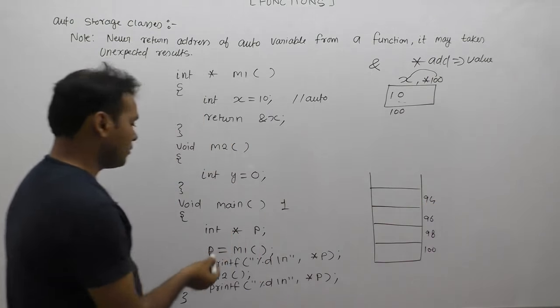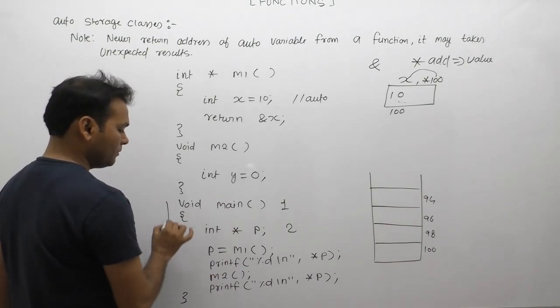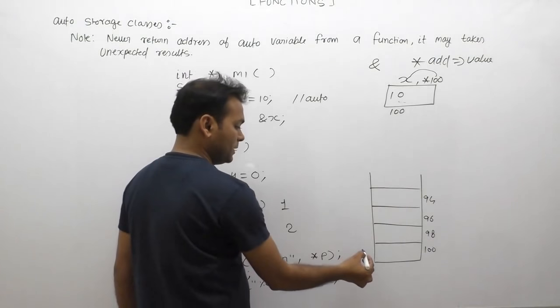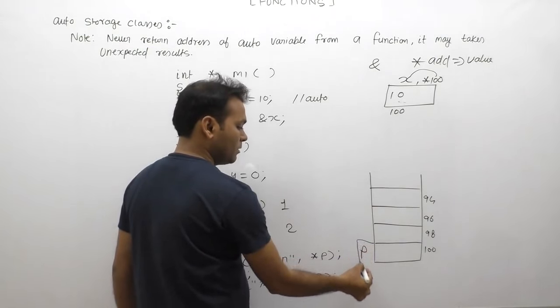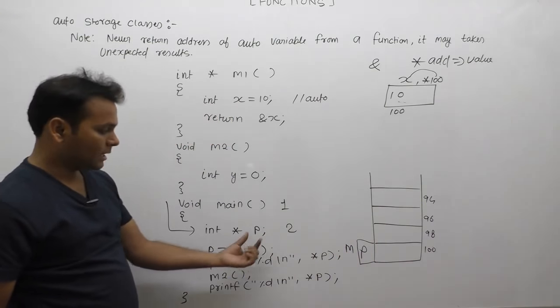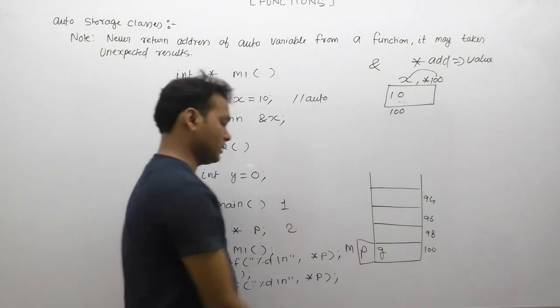First call is to main function. When execution control enters main function, then immediately perform memory allocation for p. This is the local variable of main. When you allocate, currently consider this as a garbage location with unknown value.